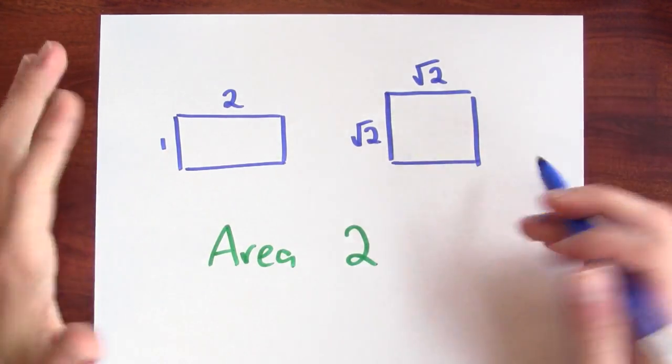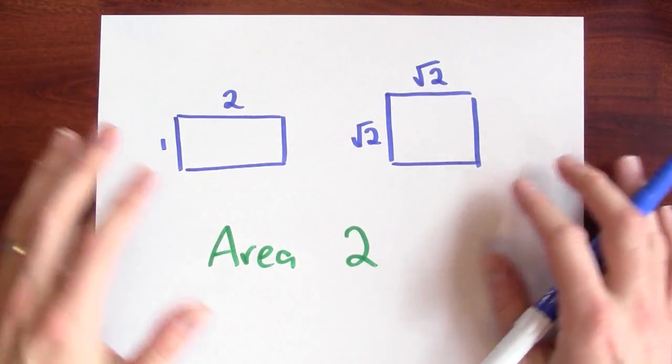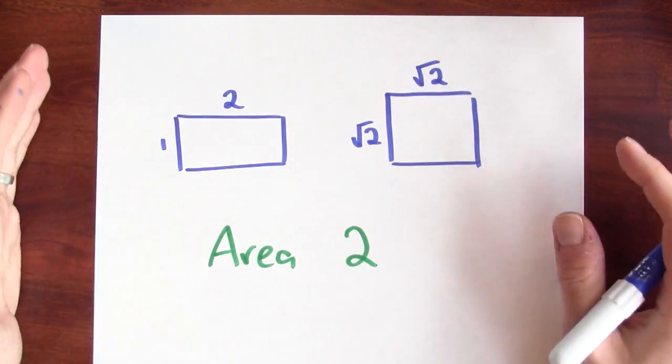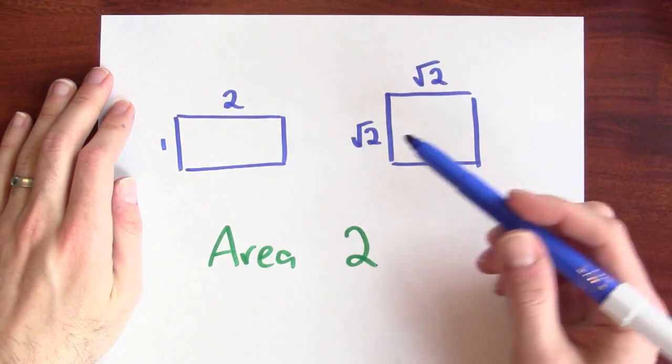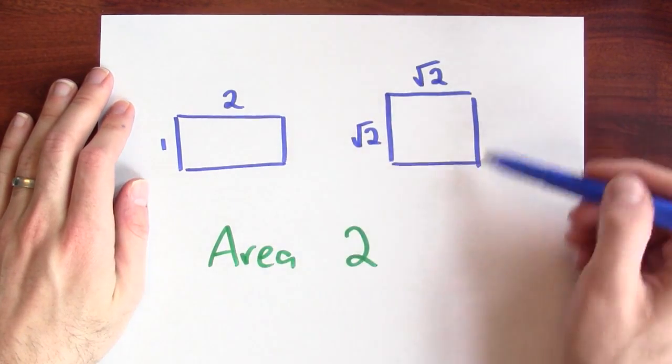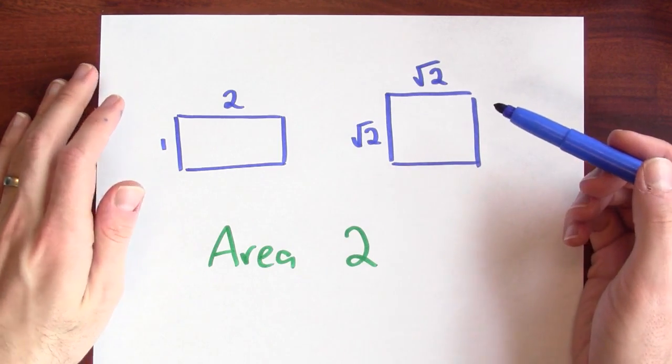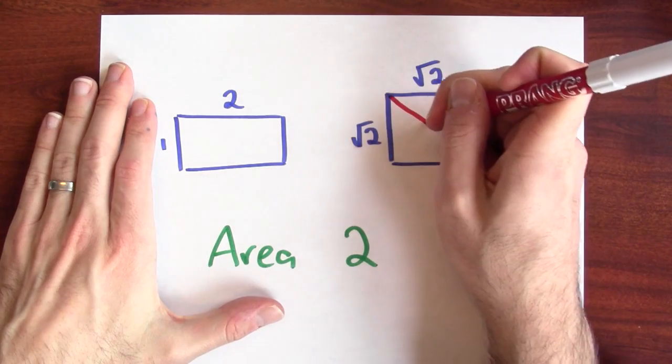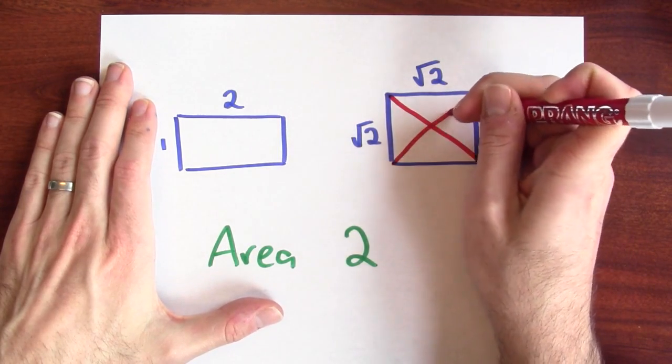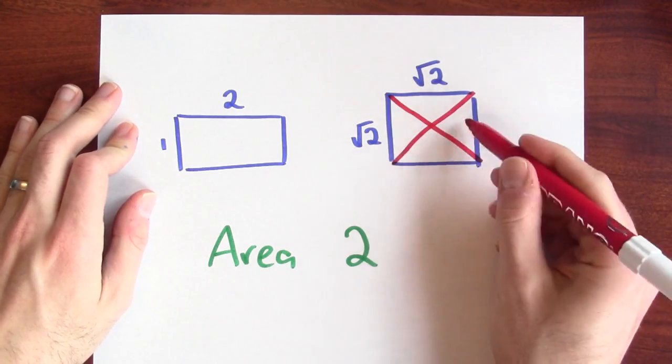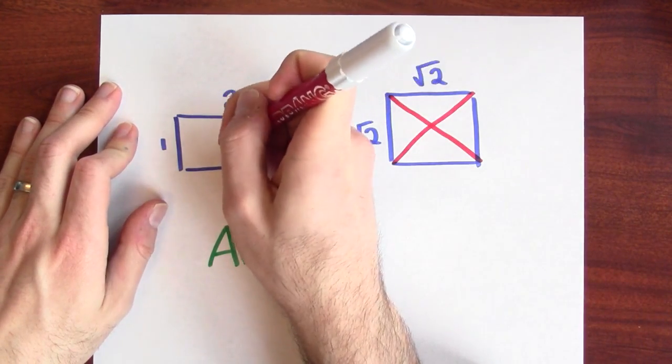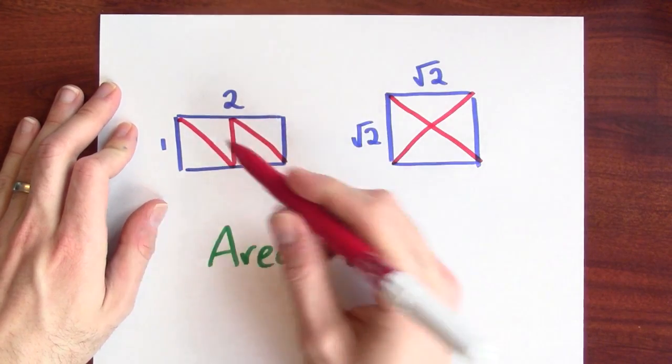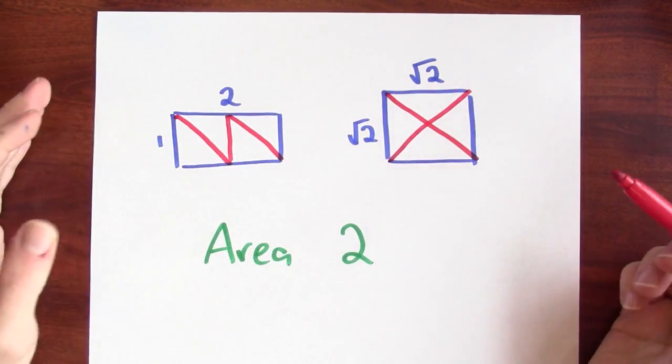And you might ask, well, if the whole deal with areas is just that they sort of cut up and add appropriately, is it possible for me to cut up this figure in order to get this figure? And yeah, it is in fact possible. If I cut along the diagonals here, these four pieces can be rearranged into these four pieces here.